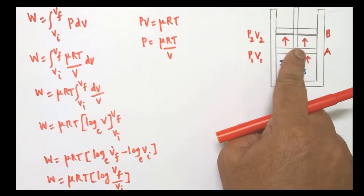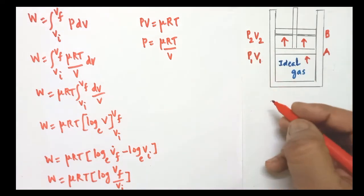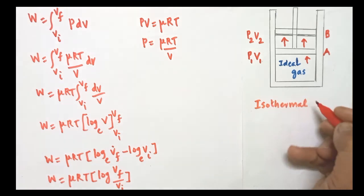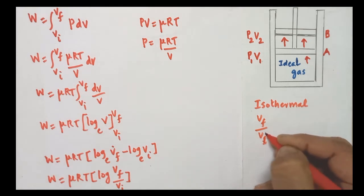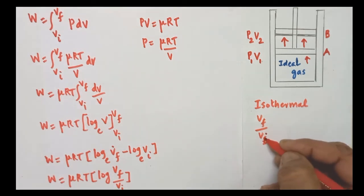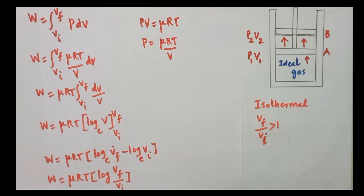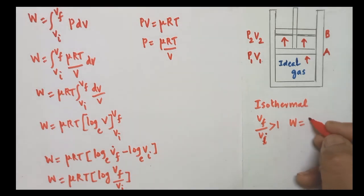In isothermal expansion, the final volume VF is greater than the initial volume VI, so the ratio VF/VI is greater than 1. Therefore, log(VF/VI) is greater than zero, and work done is positive. Work done by the gas during isothermal expansion is positive.